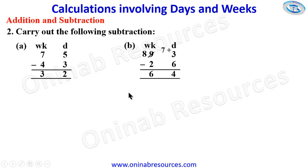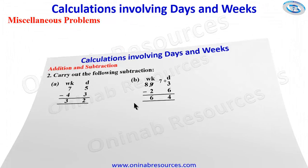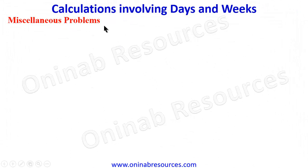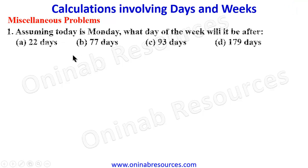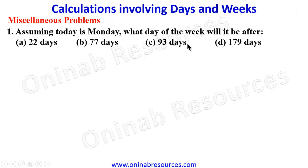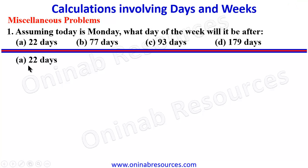That's all for problem 2. We then go to miscellaneous problems. For problem 1: assuming today is Monday, what day of the week will it be after A. 22 days, B. 77 days, C. 93 days, and D. 179 days? Starting with A: 22 days. If we divide 22 by 7, we get 3 remainder 1 — that is 3 weeks and 1 day.